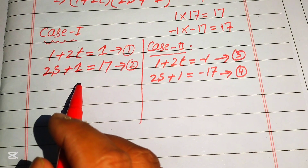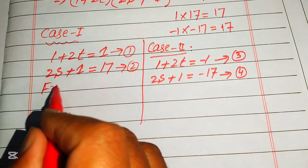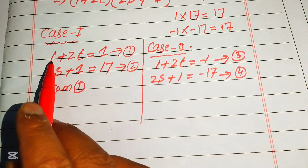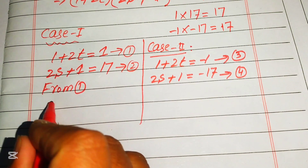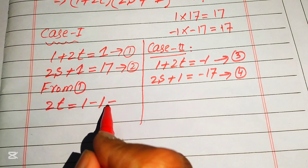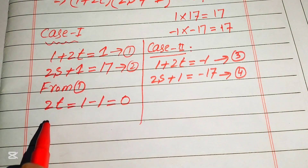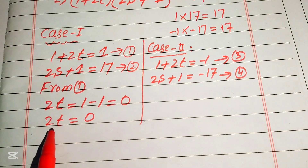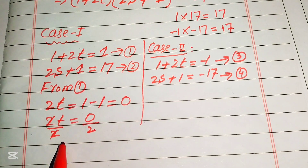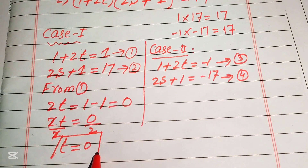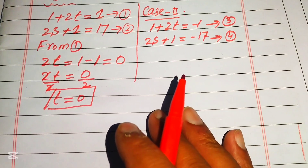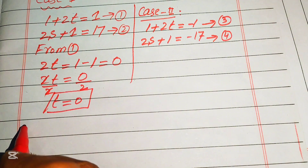From Case 1, Equation 1: 1 plus 2t equals 1. Moving the 1 to the right-hand side gives 2t equals 1 minus 1 equals 0. Dividing both sides by 2, we get t equals 0.